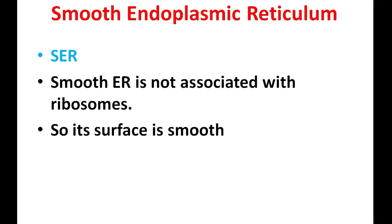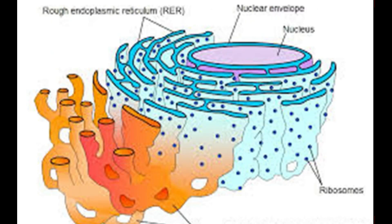Smooth endoplasmic reticulum is not associated with ribosomes, so its surface is smooth — that is why it is called smooth endoplasmic reticulum. You can see: ribosomes are attached on the rough endoplasmic reticulum, which extends continuous from the nuclear envelope. The smooth endoplasmic reticulum has no ribosomes attached, so its surface is smooth.